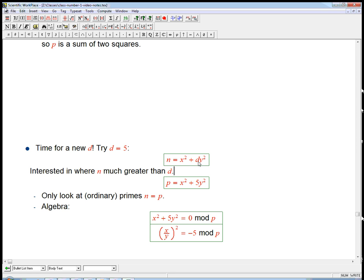If d is 117 or something, that's not prime, maybe 109, I think that's prime, then, and n is 200, it's really not hard to check a few y's and verify whether n can be written in this form, x squared plus dy squared. So we're interested in the case where n, or really we're calling it p, is much greater than d.